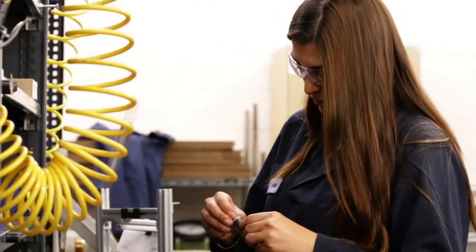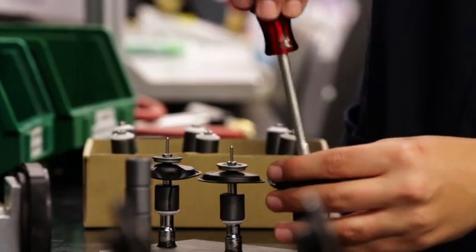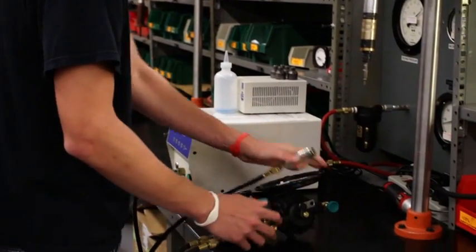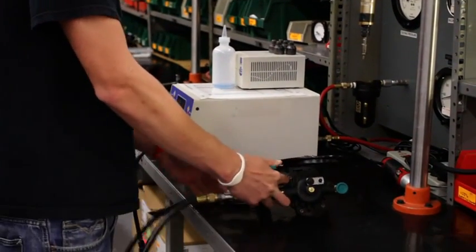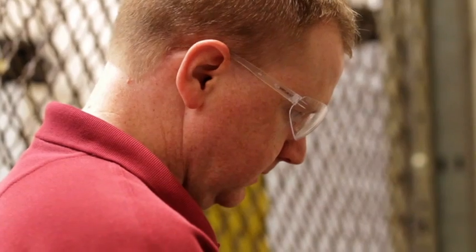We also can achieve industry best lead times while still customizing the product. A great example of this is our Backflow Test Kit, which is a super custom differential pressure gauge designed specifically to protect drinking water by testing backflow prevention assemblies.